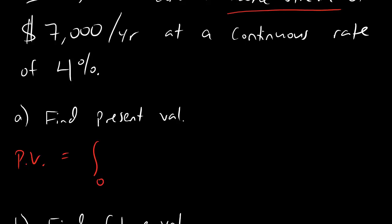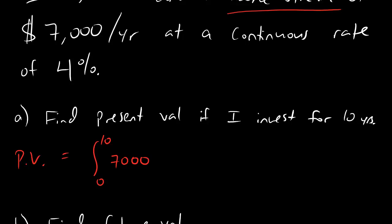We're going to take the integral from 0 to the total amount of time. Let's say find the present value if I invest for 10 years. So my integral goes from 0 to 10. Now, the thing that goes inside the integral: my income stream goes first, so it's just the number 7,000, and then I multiply by e to the minus .04 because it says continuous rate of 4%. I need a t up in the exponent, and then a dt out there.